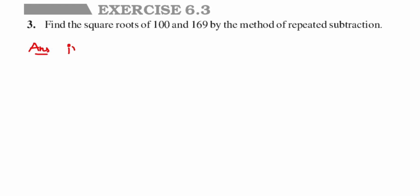I'll take the first number which is 100. The first odd number is 1, so 100 minus 1 gives us 99. Now I'll take 99 and subtract the next odd number which is 3 — you don't miss any odd numbers, it has to be consecutive. So 99 minus 3 is 96. Next, 96 minus 5 gives us 91.